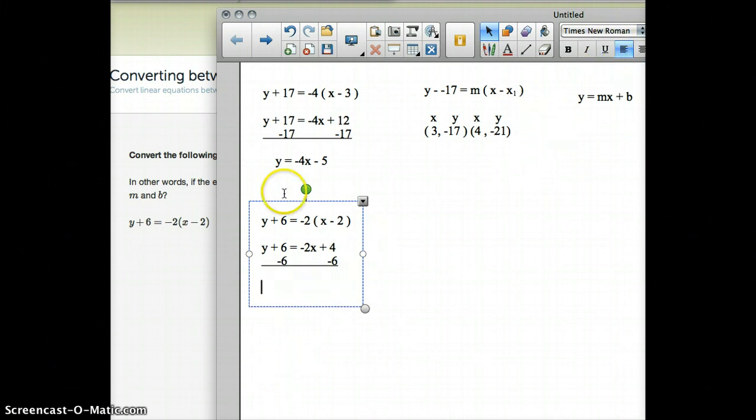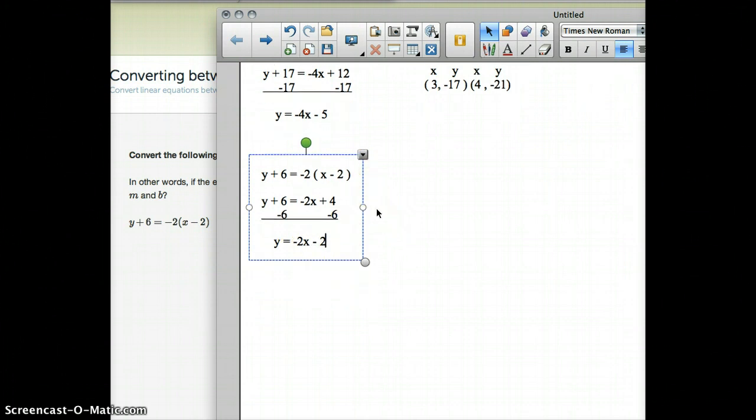When I add these together, the 6s cancel on the left side here, so I'm simply left with a y. On the right side, the negative 2x will stay because I cannot combine that with the negative 6. But the 4, the positive 4 and the negative 6, I do combine together, and that makes a negative 2. So this equation right here results in y equals negative 2x minus 2.